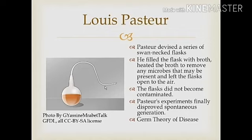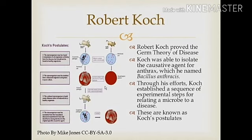As long as he tried, Pasteur was still unable to prove his own theory. However, German scientist Robert Koch did prove the germ theory of disease. He was able to do so by isolating the causative agent for anthrax, which he named Bacillus anthracis. He isolated the bacterium through an established sequence of experimental steps. These steps are known as Koch's postulates and are still used today to associate various microorganisms with diseases.